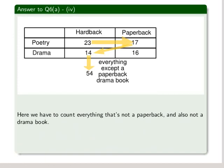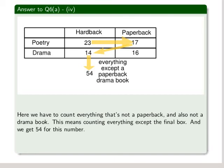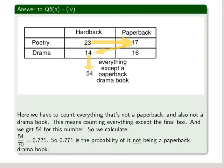Part four now. We have to count everything that's not a paperback and also not a drama book. This means counting everything except the final box. And we get 54 for this number, as you can see in the diagram. So we calculate 54 over 70 equals 0.771. So 0.771 is the probability of it not being a paperback drama book.